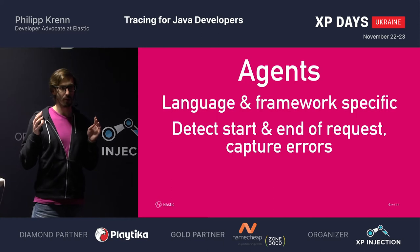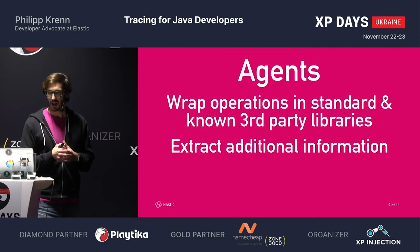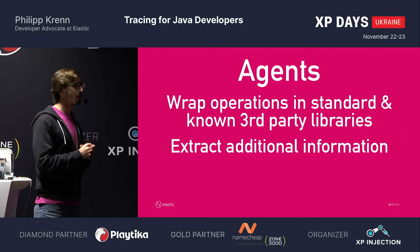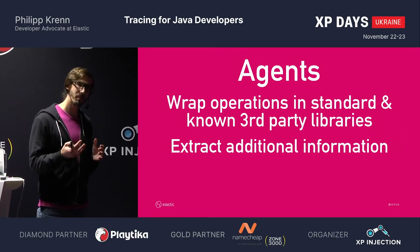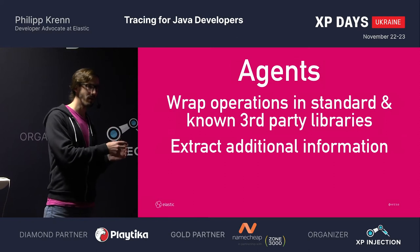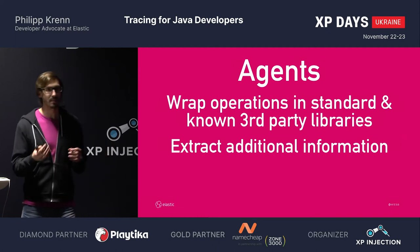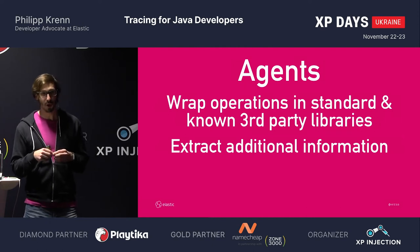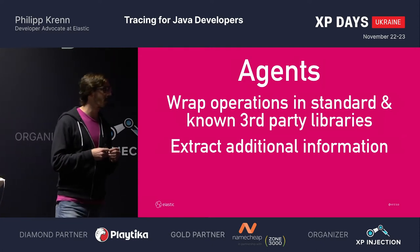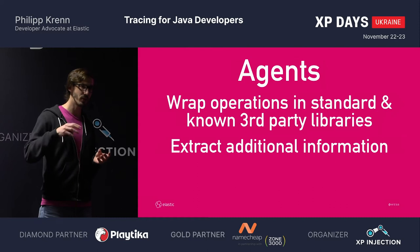You generally want to capture the start and end of a transaction and also capture if something goes wrong. You also want to wrap standard and generally known third-party libraries. For example, if you have Hibernate, it makes sense that your agent understands Hibernate — so you know what SQL query was being run, whether it was a bad query, or how long it took. That is mainly the work you put into an agent — it takes a lot of work because you have a lot of integrations to cover. For Redis, you try to extract what the Redis query was — all of that is additional metadata.